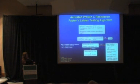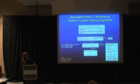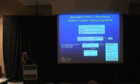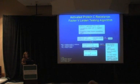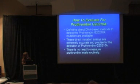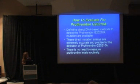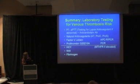If the APC resistance assay is abnormal, you'd want to genotype for factor V Leiden. If that's negative, you may have a false positive APC ratio — seen with lupus anticoagulants and direct thrombin inhibitors. Or very rarely there may be another mutation, and in that case you might go to sequencing for variants like factor V Hong Kong or factor V Cambridge. For the prothrombin mutation, you just do prothrombin genotyping — there really aren't any other screening assays.